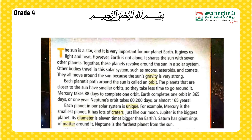For example, Mercury is the smallest planet and has lots of craters, just like our moon. Jupiter is the biggest planet — its diameter is 11 times bigger than Earth's. Saturn has giant rings of matter around it. Neptune is the farthest planet from the Sun.